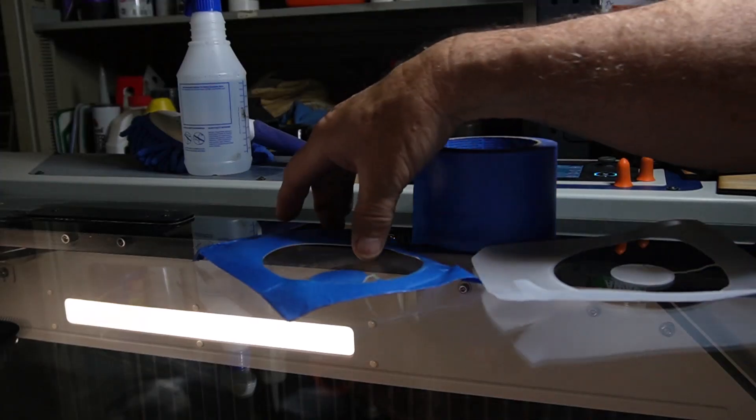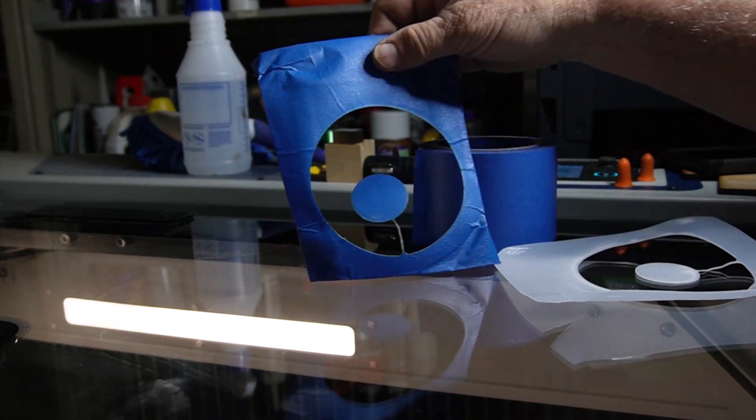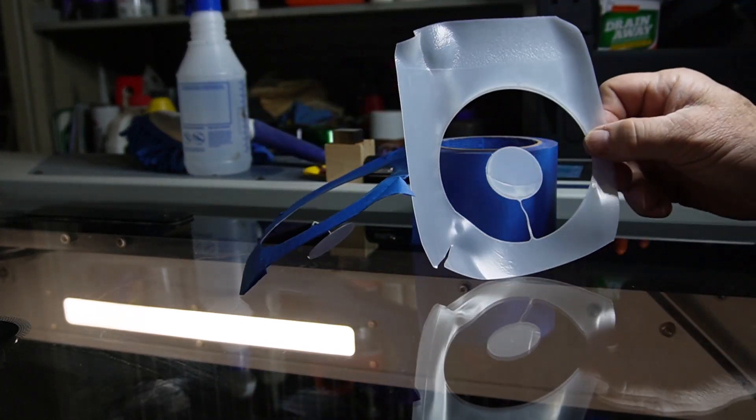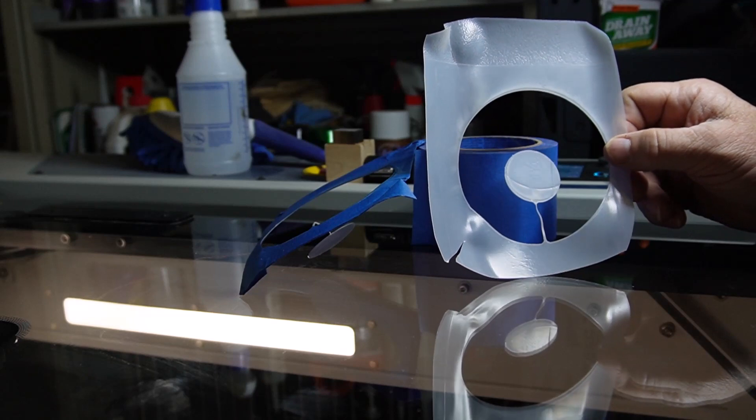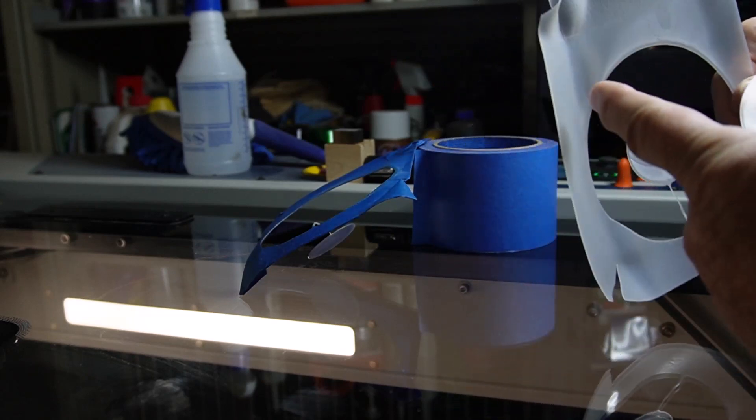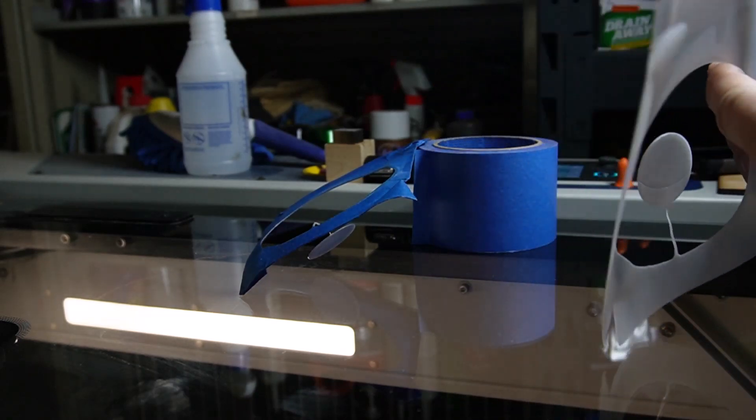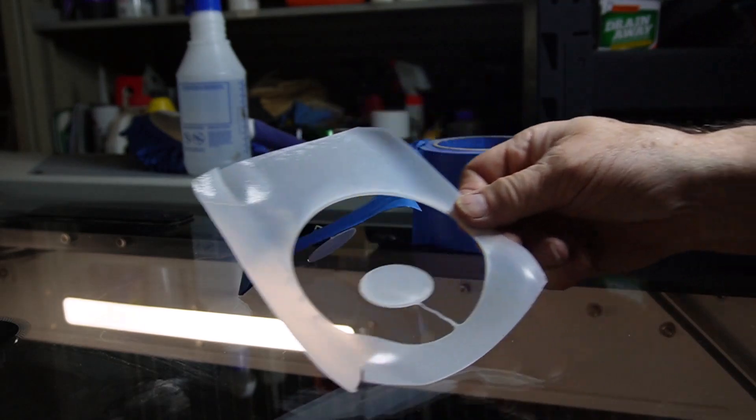Okay, here they are. There's the one that I cut out with the tape on it. There's the cut out of the one with no tape on it. You can kind of see a little bit of flaring around there and it kind of beveled the edge a little bit. It's not too bad really.